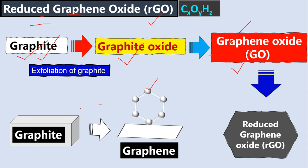From graphite we get graphite oxide. Similarly, just as graphite is a bulk material and graphene is a thin single carbon atom layer, once we get graphite oxide we use oxidizing agents or other processes to get graphene oxide. In the same way, graphite oxide is thick and graphene oxide is thin. From that graphene oxide we get reduced graphene oxide, which has more or less the same characteristics as graphene.